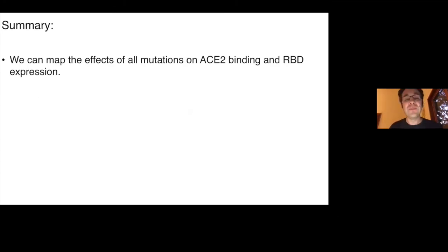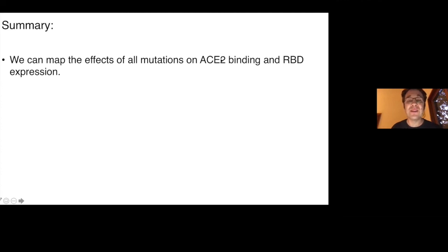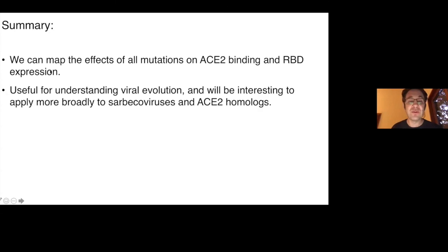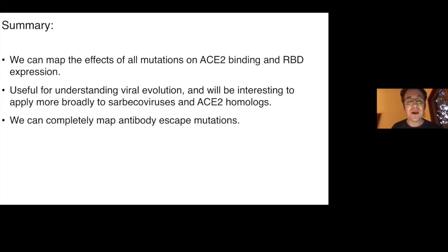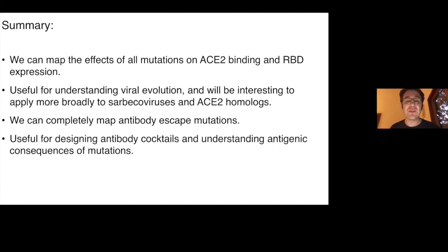As a summary, our basic goal has been to generate maps of the phenotypic effects of mutations, which we hope could be a tool useful for people doing viral genomic surveillance as well as basic science studies of these proteins. We've made a map of the effects of all mutations on the receptor binding domain's ability to bind ACE2 and on the expression of properly folded protein, which is useful for understanding viral evolution and for applying to sarbicoviruses more broadly to understand which ones could adapt to bind human ACE2. We're also building complete maps of antibody escape mutations, useful for designing antibody cocktails with orthogonal escape mutations and for interpreting antigenic consequences of mutations observed in natural viral sequences.